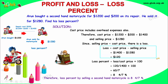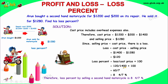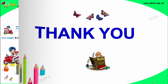The loss is equal to cost price minus selling price: $1400 minus $1280 gives a loss of $120. So the loss percentage is loss divided by cost price into 100.